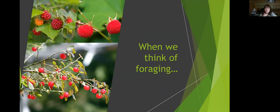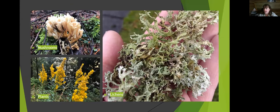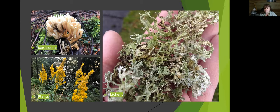When we think of foraging, many of us think berries — salmon berry, thimbleberry, and huckleberries are the biggest around here. But there's more. Three taxa for dyeing: mushrooms, plants, and lichens. Everything on the screen right now are dyers. The coral mushroom Ramaria gives a vibrant purple but must be used right away — it cannot be stored, dried, or frozen. Goldenrod gives brilliant yellows. The lichen Evernia prunastri, found on hardwoods in urban areas, can be collected after windstorms.